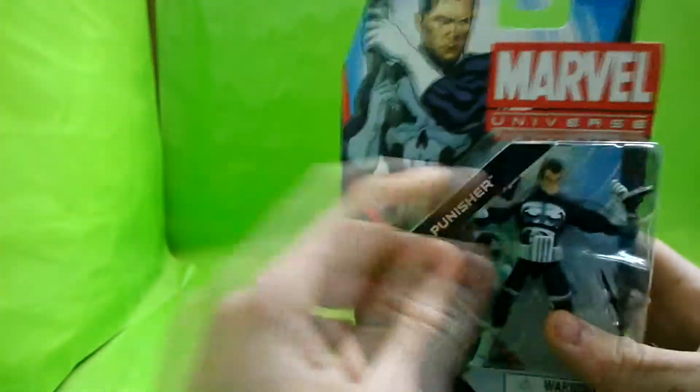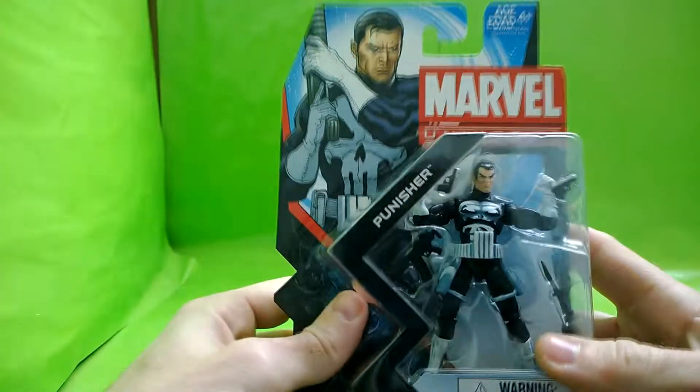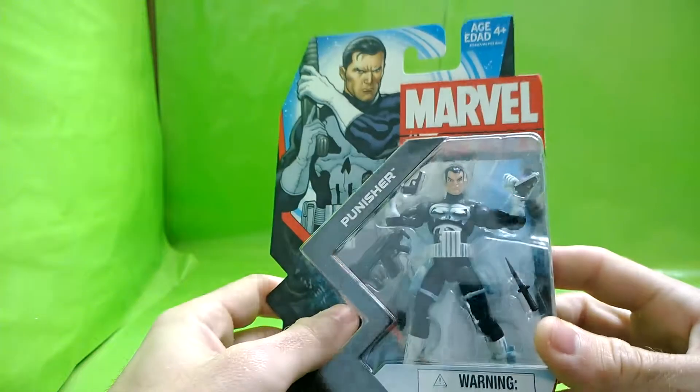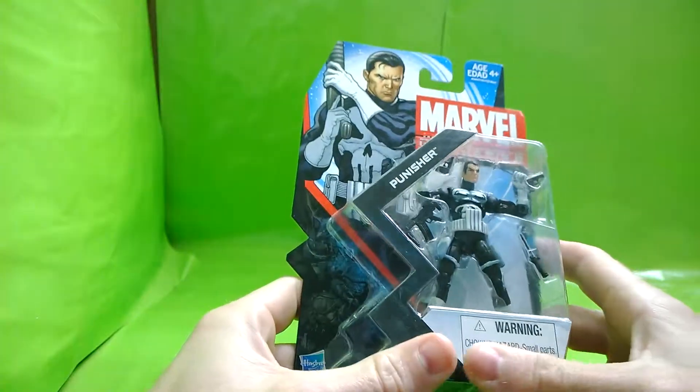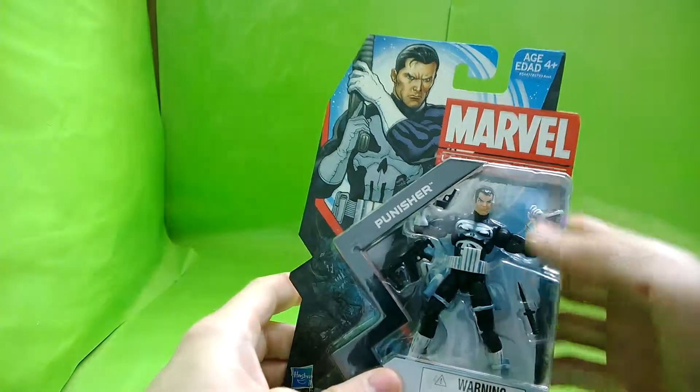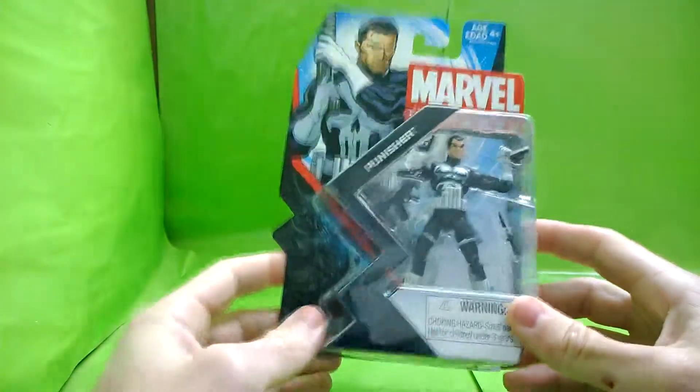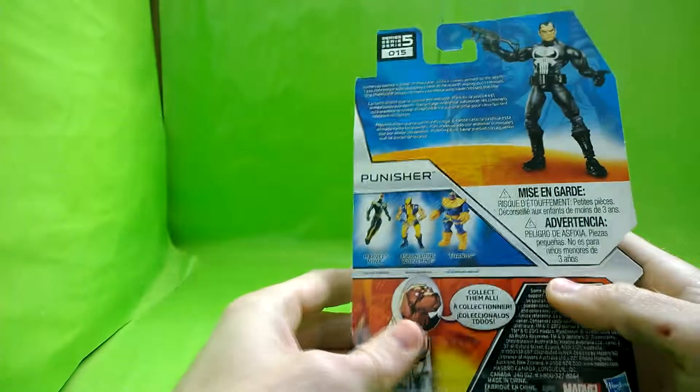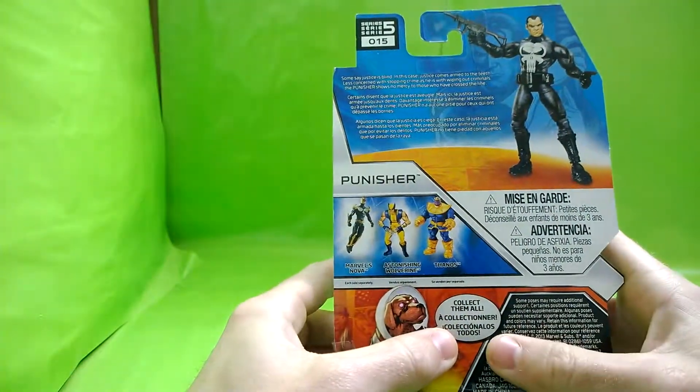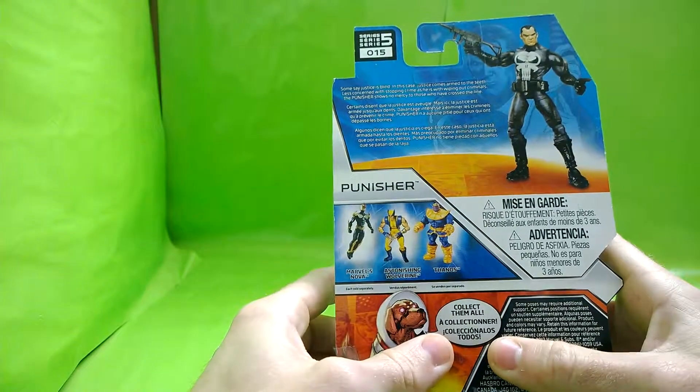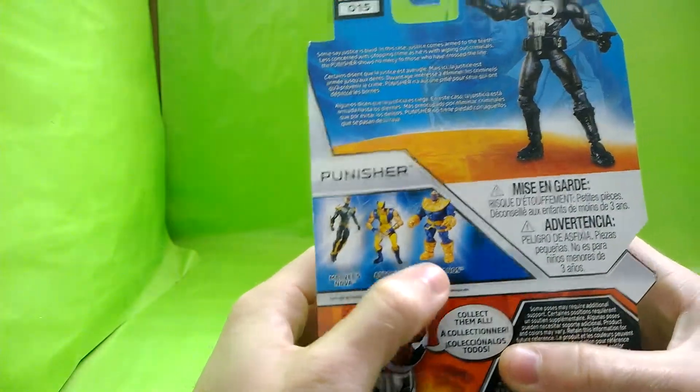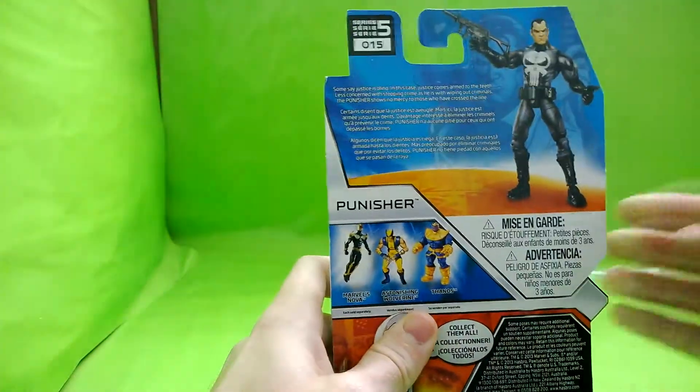He does not play around if you've watched his movies and read his comics. There's a warning sign so you don't choke on your figures. Ages four and up, so it's not a bad package. It says collect them all - Marvel Nova, Astonishing Wolverine and Thanos. Let's get this bad boy opened up.